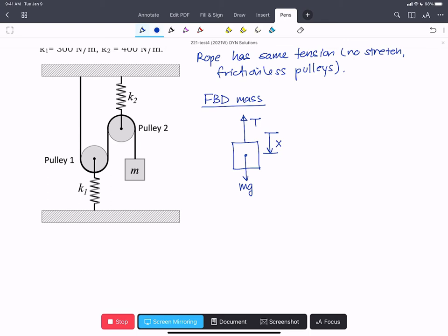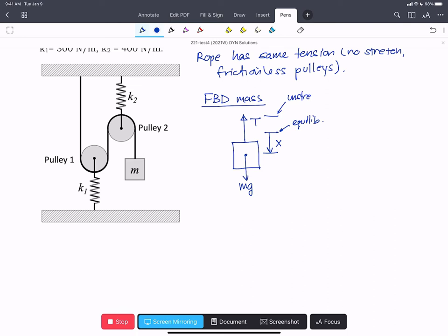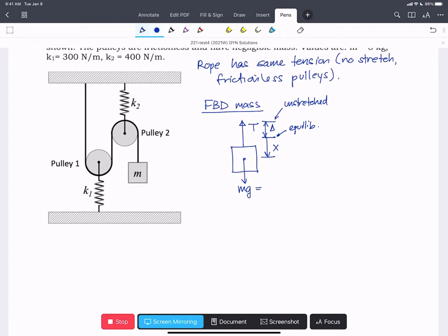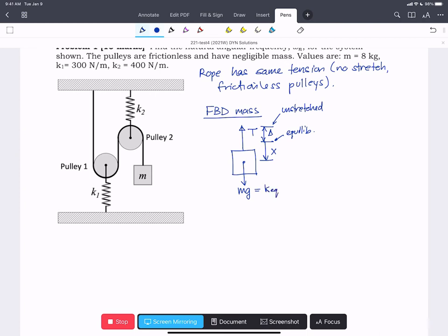We're going to assume that we're going to perturb it in the x direction as shown. Now this is the equilibrium point. But because we have springs there will have been some point where the springs were unstretched before the mass was applied. We'll call that a distance delta. And we know that in every system that is not a pendulum, the mass or the weight of the system will exactly equal the equivalent spring constant times delta. So we can essentially eliminate that from our equation.